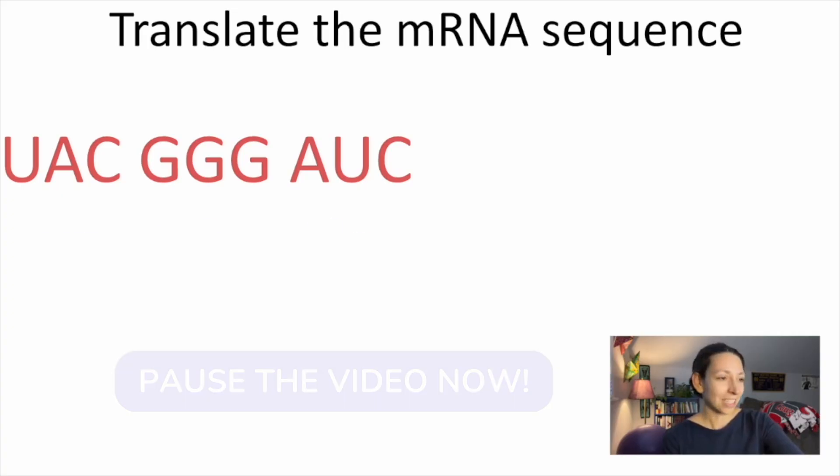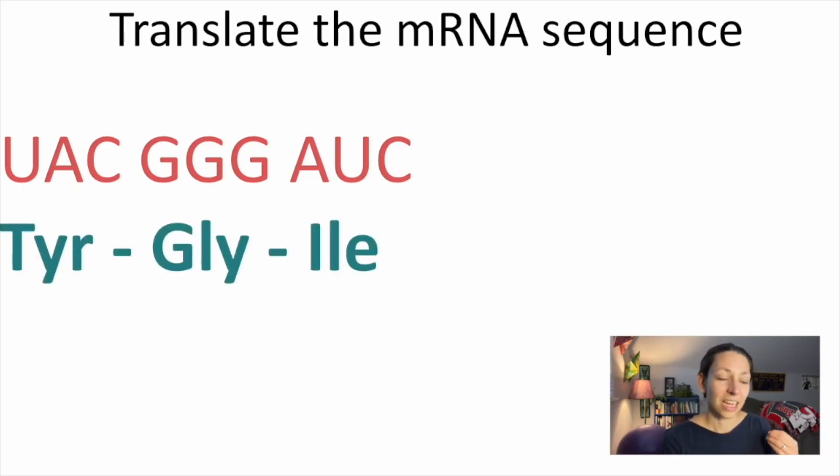All right. Correct answer is tyrosine, glycine, isoleucine. These short words are just abbreviations for the full names of the amino acids, which you don't need to memorize. If you've got your codon chart, the abbreviations are just fine. So if you wrote T-Y-R-G-L-Y-I-L-E, you are in good shape.